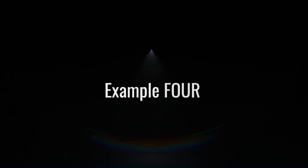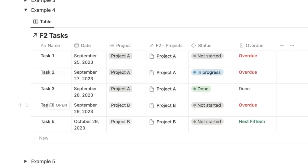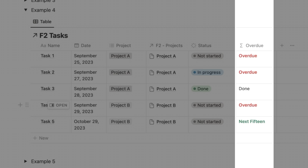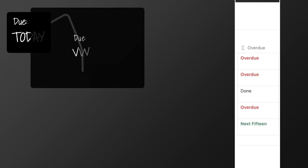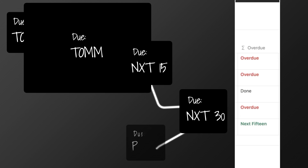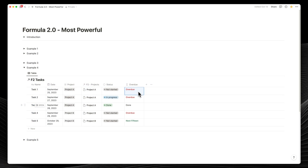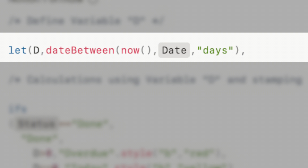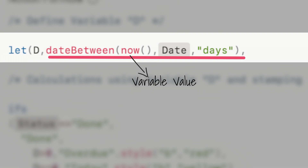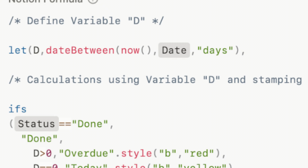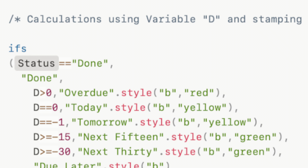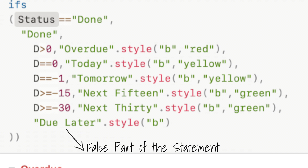Example 4. While we've given tasks a status, we also have to build for overdue. We'll add an overdue formula in the tasks database covering: due today, due tomorrow, due within the next 15 days, due in the next 30 days, and due much later. We define a variable — D — for the days between the date property and today's date, using the let command. To define the various overdue scenarios, we introduce a multiple if statement: ifs. The syntax is a combination of conditions followed by true results in sequence — if true, if true, if true — followed by the false part of the statement.